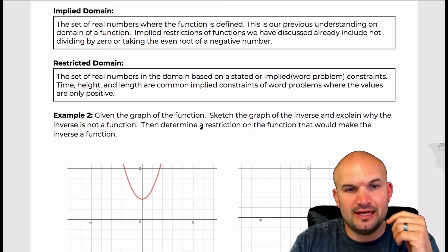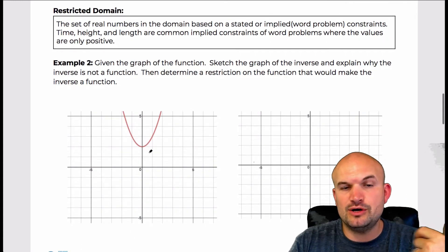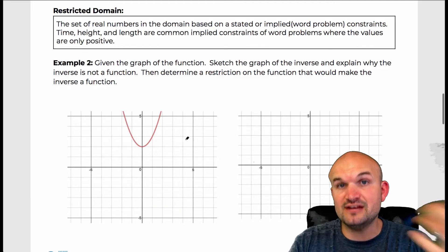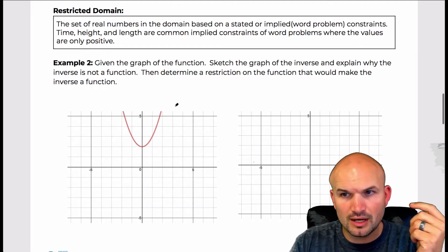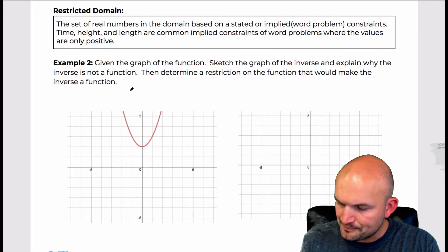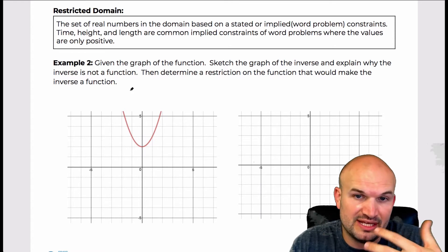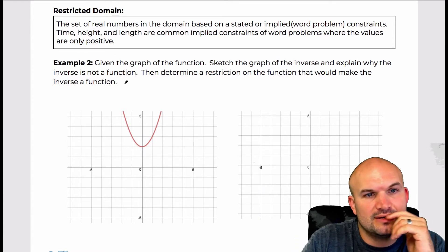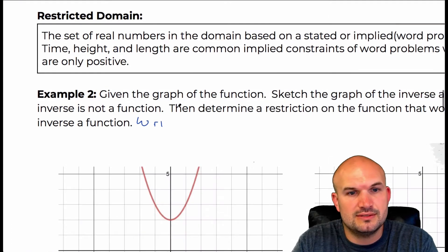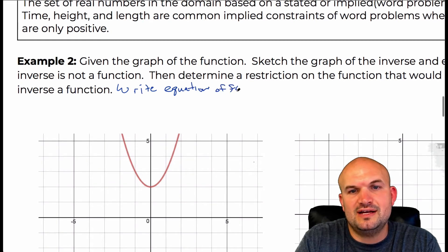This comes in handy because if we follow our general rule of thumb for finding the inverse, as we did in the previous examples, we would notice that the inverse of this function is not going to be a function. What I wanted to do is go ahead and define what the equation is as well as the equation of the inverse. So let's write the equation of f(x) and f⁻¹(x).